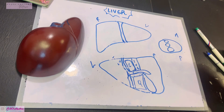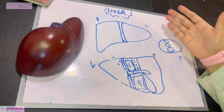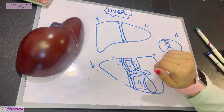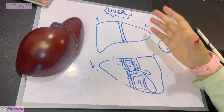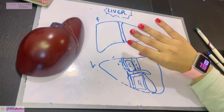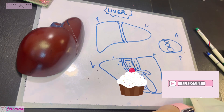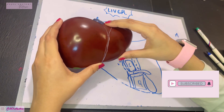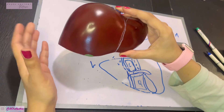Assalamu alaikum, this is Dr. Hasna from Hasna's Anatomy, and today I am discussing the liver. If you haven't watched the previous video where I discussed the anatomical structure of the liver, you should watch that first. In this video we're talking about the peritoneal relations and the visceral relations of the liver. Let's begin with the peritoneal reflections of the liver.